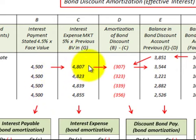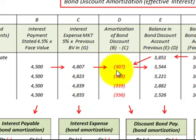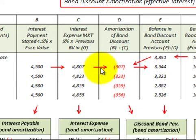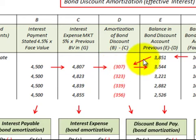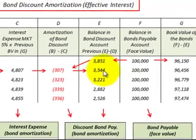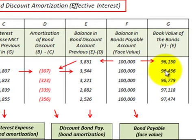Now we have to recognize that interest expense on our income statement. That's based on the market rate of interest times the carrying value of the bond each period. And then there's this amortization amount — the difference between the interest payment and the interest expense recognized each period. In this case, $4,500 minus $4,807 for the first period gives us a $307 amortization amount. You reduce your balance in the bond discount by that $307, and by doing that — by reducing this bond discount — it actually increases the book value of the bond.